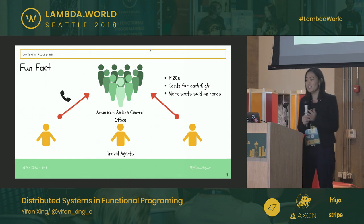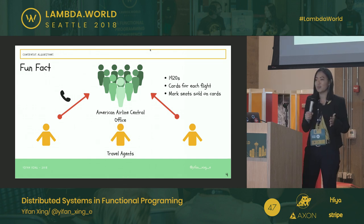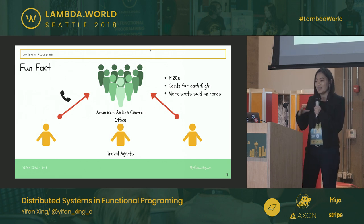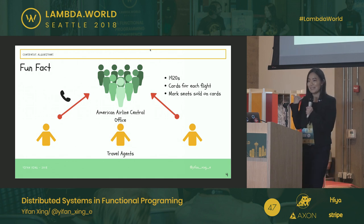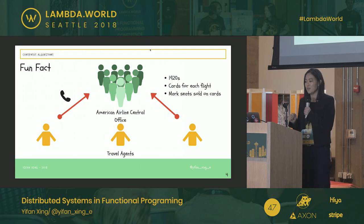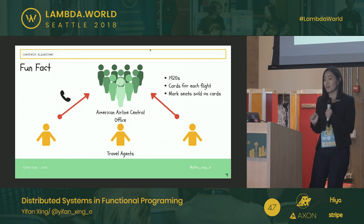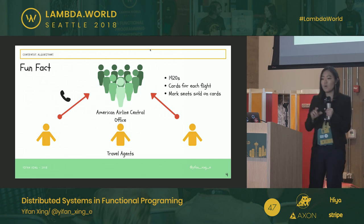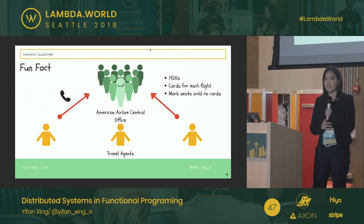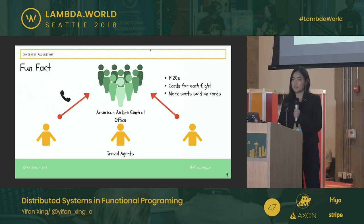Fun fact: in the 1920s, American Airlines' central office had a deck of cards for each flight. Traveling agents would call in and say they wanted to buy a seat, and the office staff would check whether it had been sold. They would mark the seat as sold or confirm it was available. This is a very early example of a human distributed system.